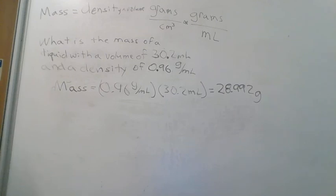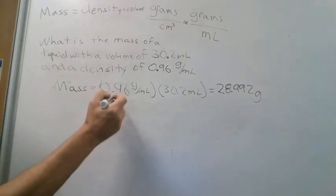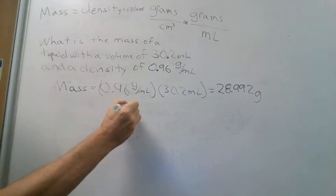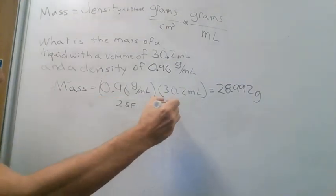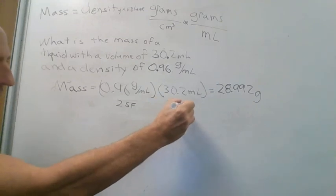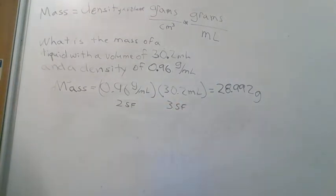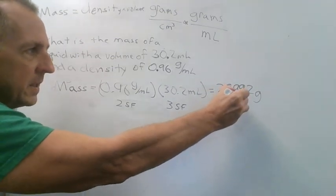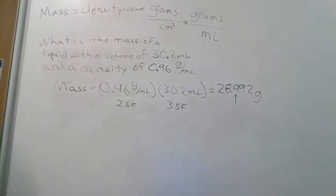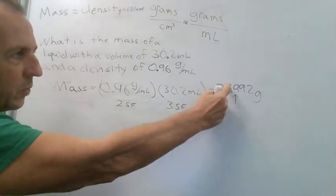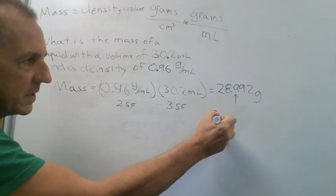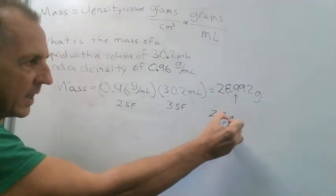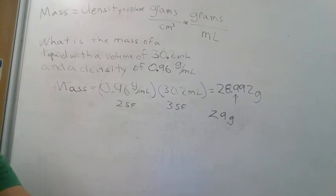To finish, we address significant figures. The density 0.96 has two significant figures. The volume 30.2 has a captive zero, making all three digits significant — three significant figures. So we round our answer to two significant figures. Counting to the third digit, it's greater than five, so we add one to the preceding number. The final answer is 29 grams.